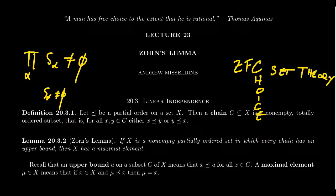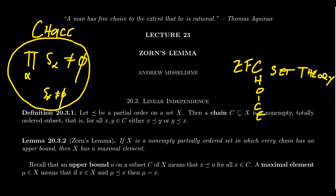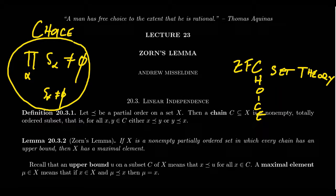When you frame it that way, choice seems somewhat natural. There are some bizarre consequences of accepting the axiom of choice — like the Banach-Tarski paradox, one of the most famous, where you can dissect a ball in three-dimensional Euclidean space into five pieces, then reassemble them to get two balls of the same volume. It seems very counterintuitive, but choice is a very natural thing to accept in set theory because it makes sense that we'd want Cartesian products to be non-empty in general.